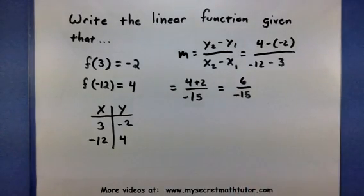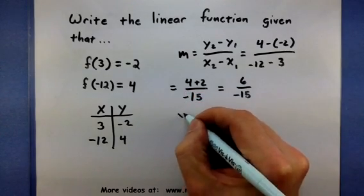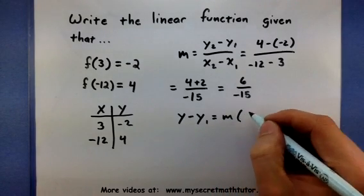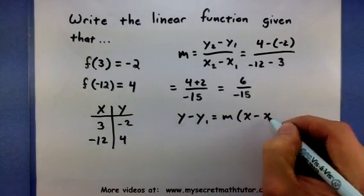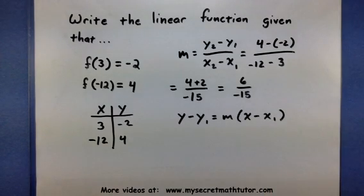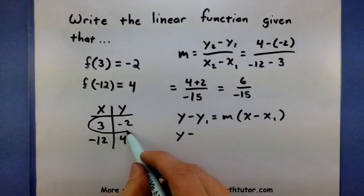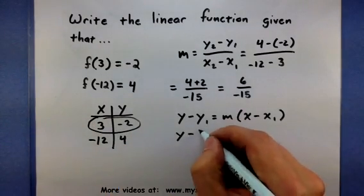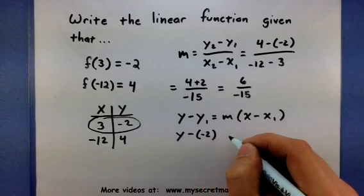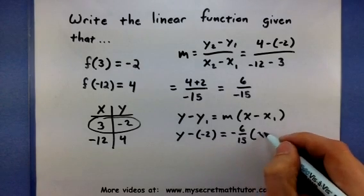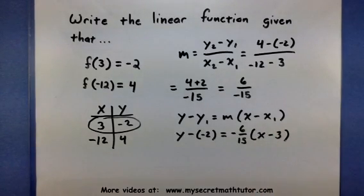So this gives us the slope of our linear function. Now let's continue and use another formula known as point-slope. We are going to plug in one of our points and the slope we just found to create that equation. So y minus—and just to keep things simple, I'm going to use the first point—y - (-2) = -6/15(x - 3). That's looking pretty good.